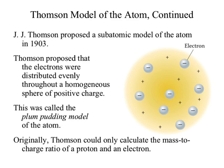Everybody likes to associate the plum pudding model with Thompson, probably because we can all point and laugh at him. That's a bit unfortunate, because the real discovery here is the electrons. He could only calculate the mass-to-charge ratio for those particles — he doesn't know the exact mass or the exact charge, just that the particle has some negative charge and the relationship between that charge and the mass.